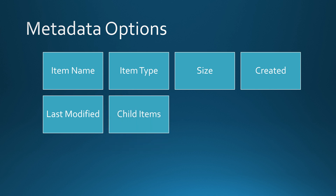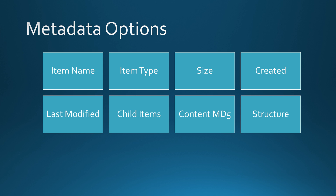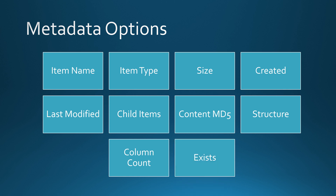Then we have child items, which returns all the files and folders inside a folder. Then content MD5, which returns the MD5 hash of the file. Then structure, which can be used to fetch the structure of a file or a table in a relational database. Then column count, which returns the column count of a file or table. And finally, exists, which checks whether the file or table exists and returns a boolean value — true or false.